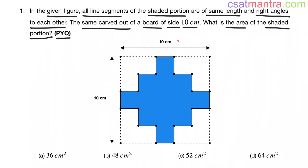The length of this side is 10 centimeters, and this side is also 10 centimeters, so it is a square. These line segments are of equal length and at right angles to each other. Let us call the length of these line segments as x.